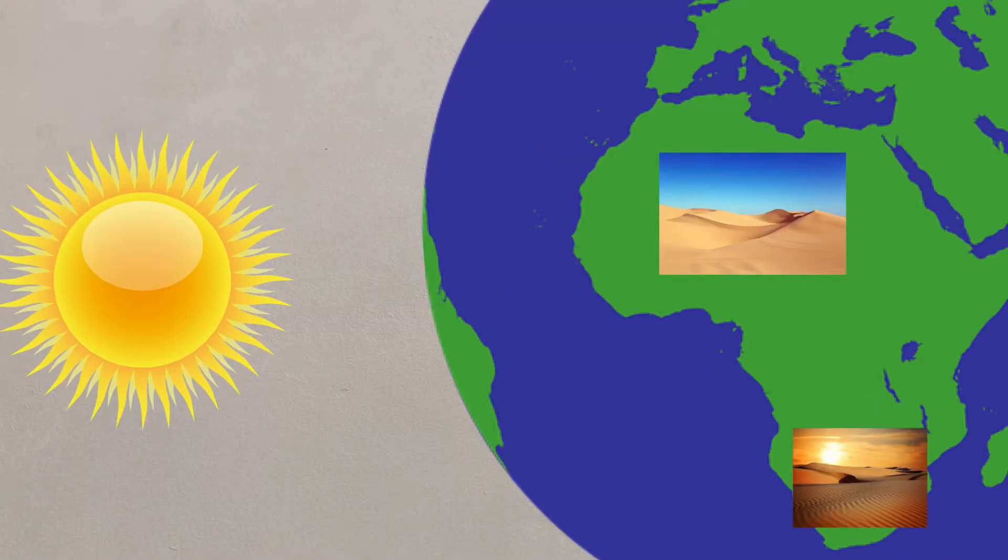Hot deserts are found around 30 degrees of latitude where air is sinking, creating high pressure. This high pressure means that clouds can't form, meaning no shade or rain in these arid areas.